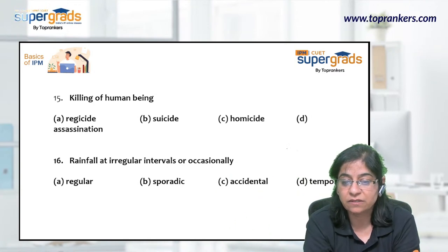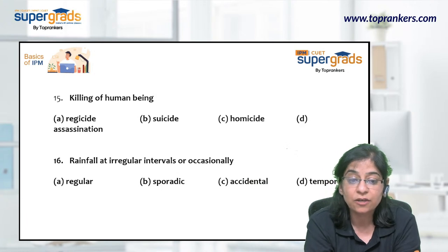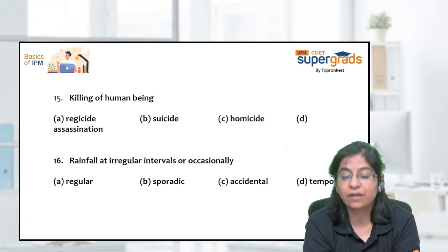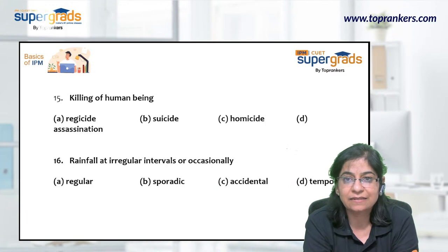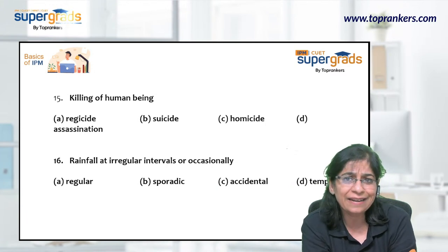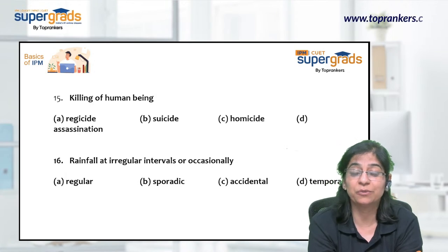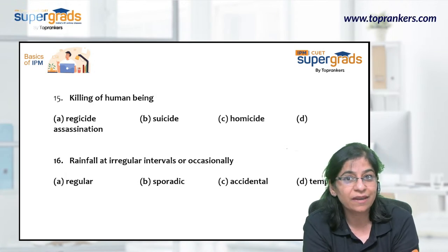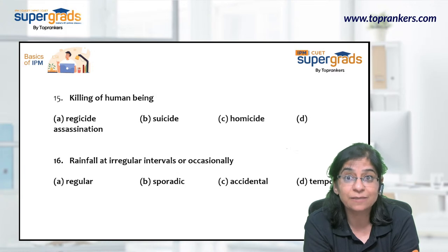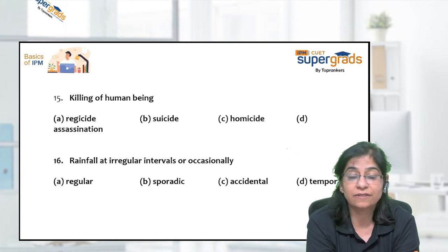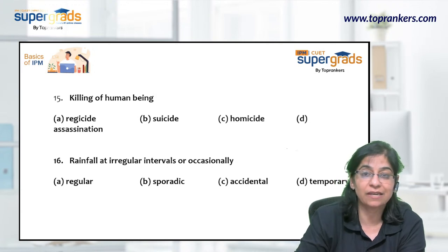Next: 'Rainfall at irregular intervals or occasionally.' Regular should be ruled out immediately. Sporadic means something that is not regular — intermittent, with no fixed pattern. Accidental is an adjective meaning unplanned. Temporary means for the time being, not permanent. The answer is option B — sporadic — meaning happening at irregular intervals or occasionally with no particular pattern.